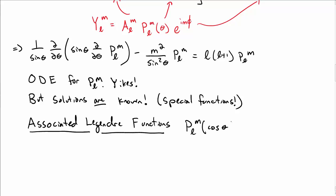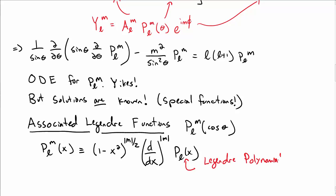And again, we label them P_lm of cosine of theta. So they're functions of cosine of theta. P_lm of x, for any x, is defined to be 1 minus x squared to the absolute value of m over 2 times d by dx to the power absolute value m of P_l of x, where P_l are our usual Legendre polynomials that we know and love. In a later video, we're going to look at some more properties of the associated Legendre polynomials and see what our eigenfunctions actually look like.